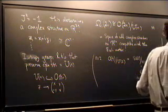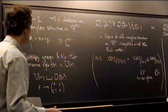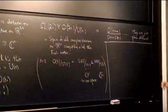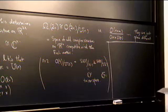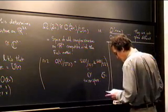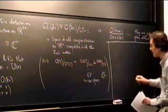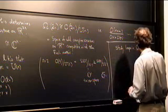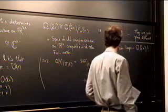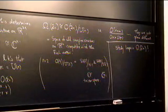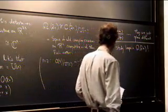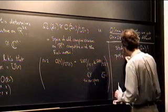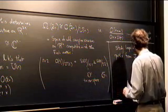If you were a loser, you might say it doesn't work and give up. But the right thing to do is to study loops in omega_1(2N) — if at first you don't succeed, loop again. We study loops in omega_1(2N), or equivalently, paths from J to -J.